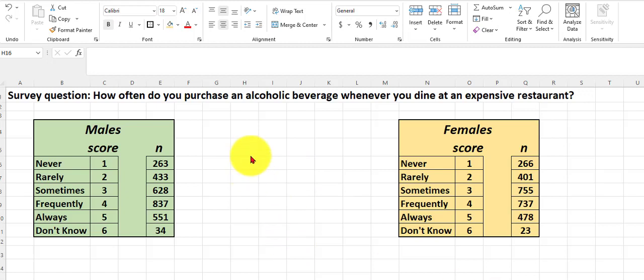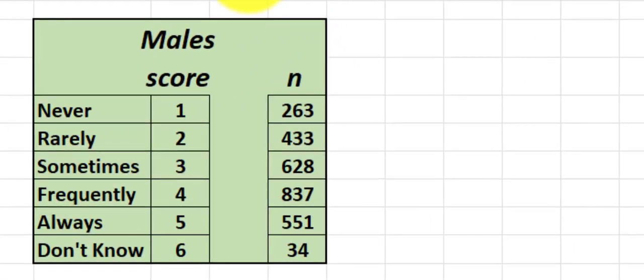You've got to think columns, right? Every variable is a column in SPSS. So you would think that you have a column named how likely are you to purchase an alcoholic beverage when you go to an elegant restaurant. 263 people answered never, so you would have 263 cells with the number one in them. And then underneath that, you'd have 433 with twos in them, etc., all the way down.